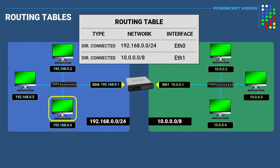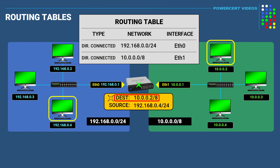So now when a computer on the 192 network wants to communicate with a computer on the 10 network, the computer will send a data packet to the router. When the router receives the packet, it'll look at the destination IP address of the packet, which is 10.0.0.2, and refer to its routing table to determine where to send the packet. The router will look at its routing table and see that this packet is intended for a device on the 10 network, and will forward the data out this interface to the intended computer.